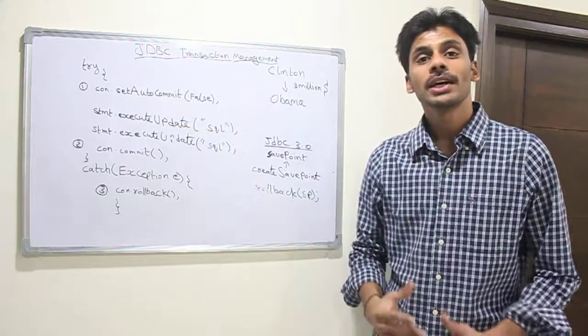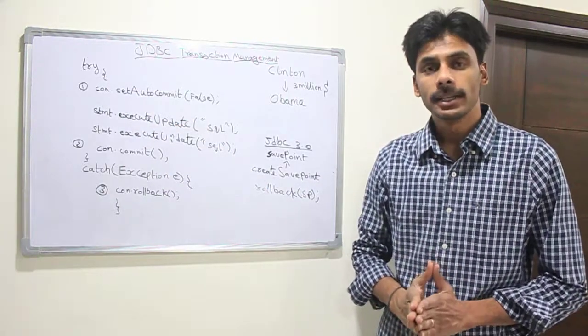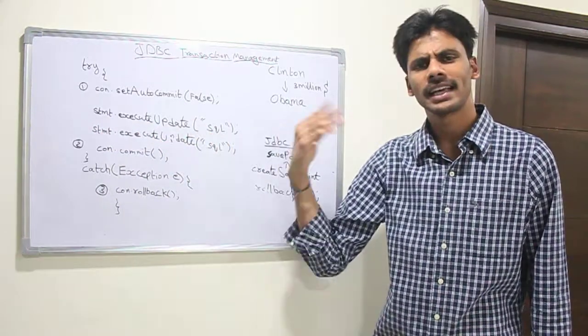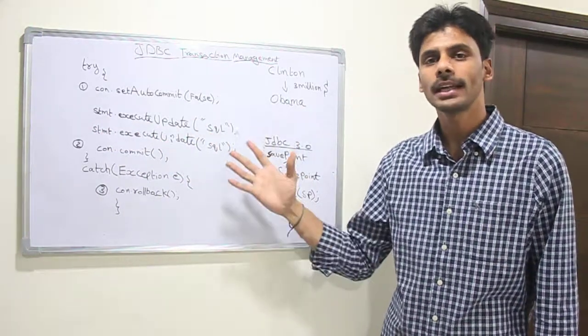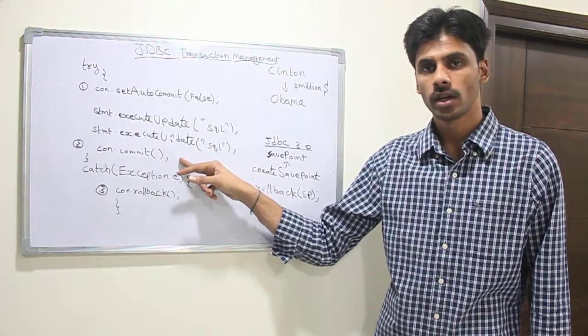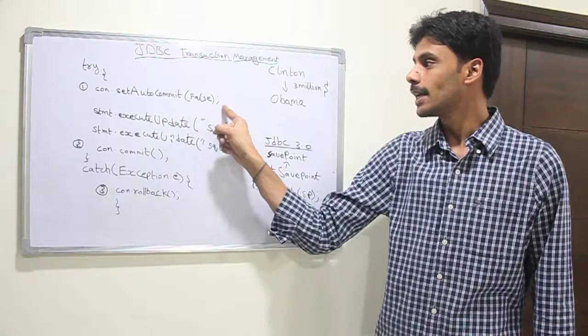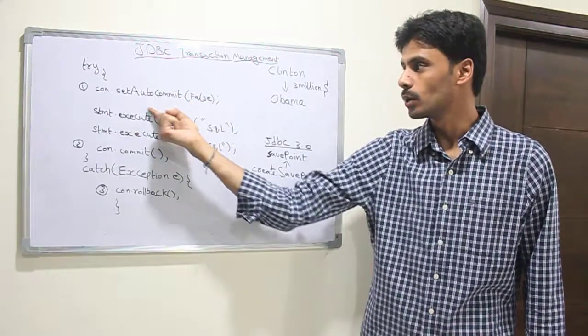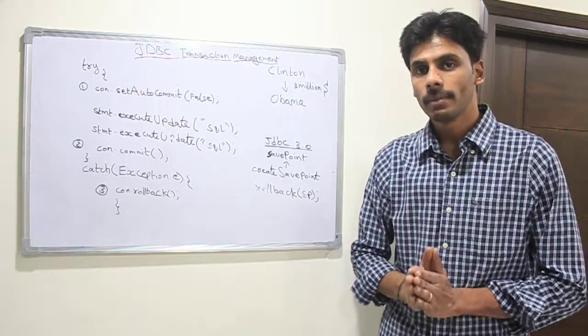SetAutoCommit allows us to turn on transactions in JDBC. By default, when you execute an execute update statement and give it a DML like insert, update, or delete, automatically those changes are committed to the database even before the next statement executes. But once you turn setAutoCommit to false by passing a boolean value false to the setAutoCommit method, transactions will be enabled.